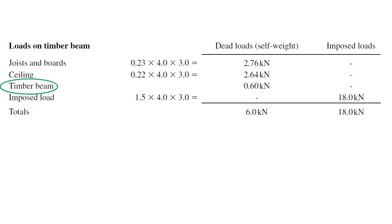Third load type is timber beam. This is the self-weight of the timber beam. 0.6 kN is given in the design data as an assumed value.